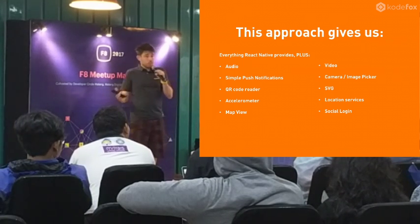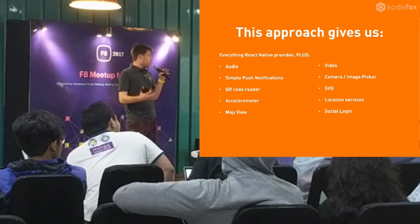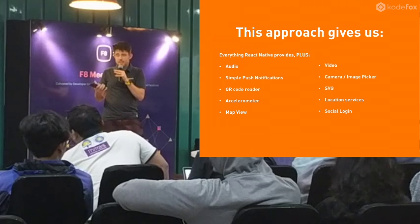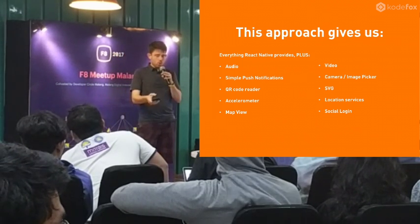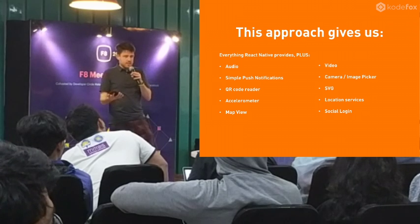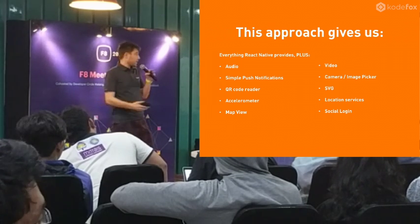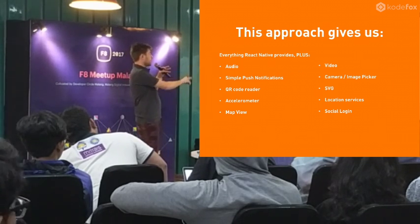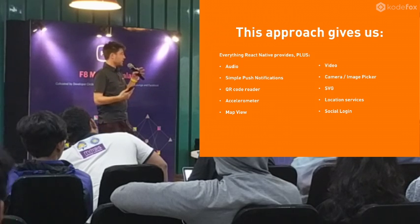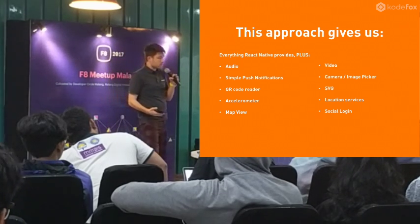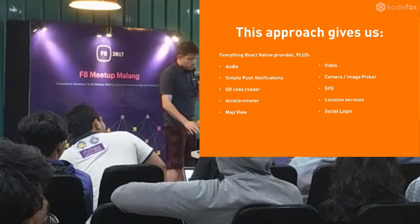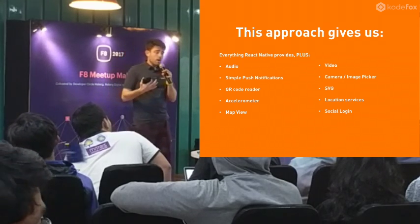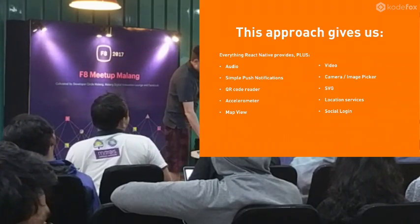This approach using Expo gives us all of the core React Native libraries built in — mostly access to the touch system — plus access to location and those kinds of things. It also gives us extra stuff like audio and video. Expo gives us a QR code reader, maps, location services, and social logins. A lot of the tools you need to build an app already exist, built by other people, and we can just use them pretty easily.